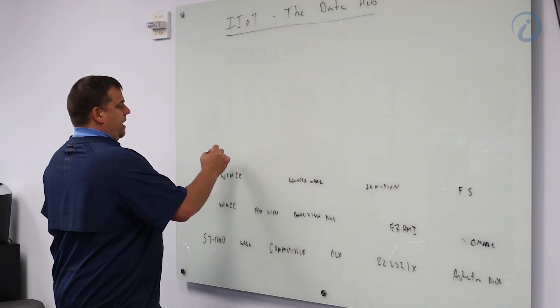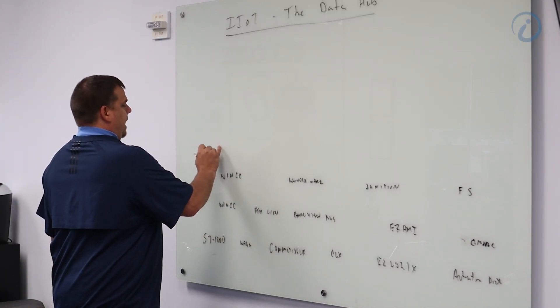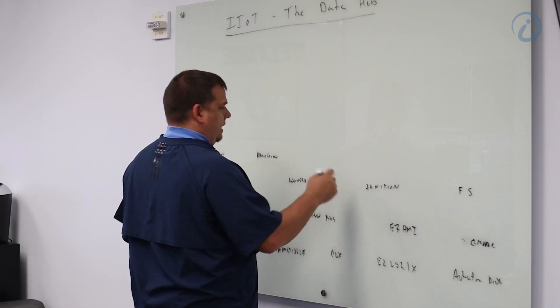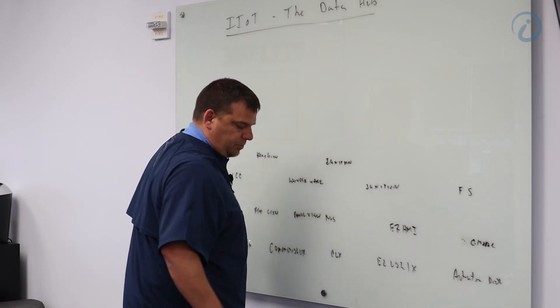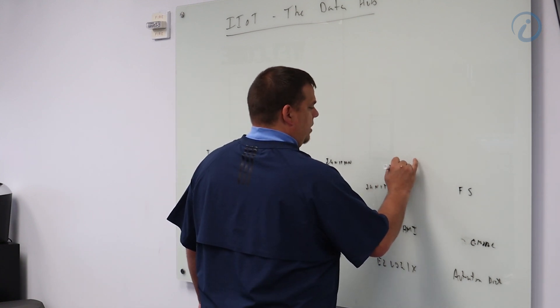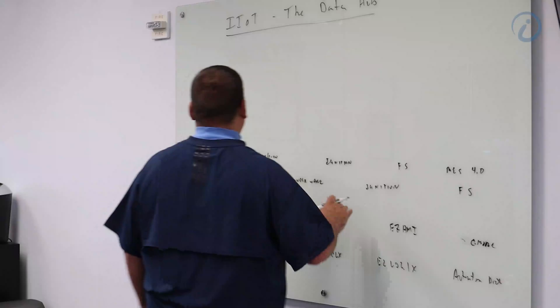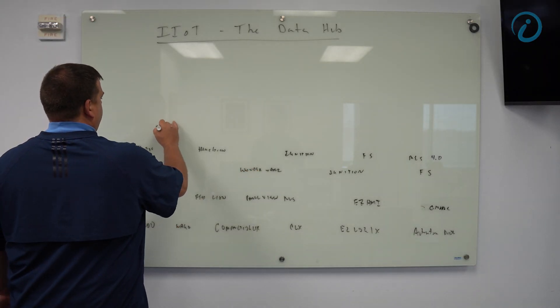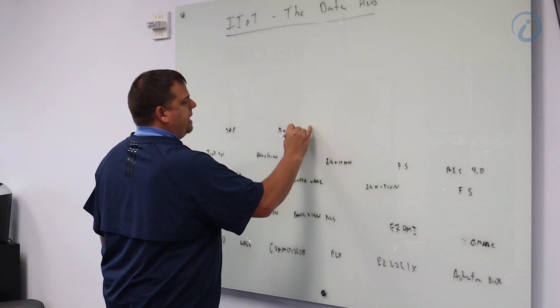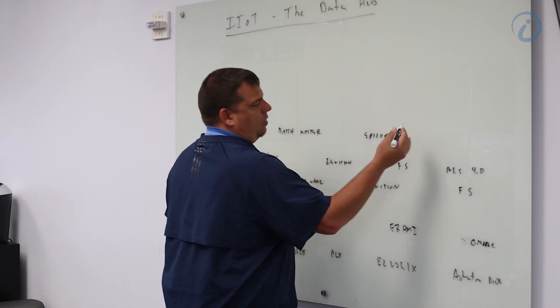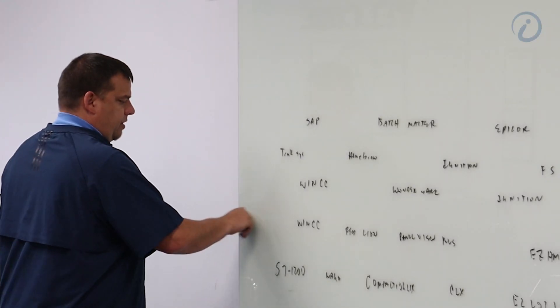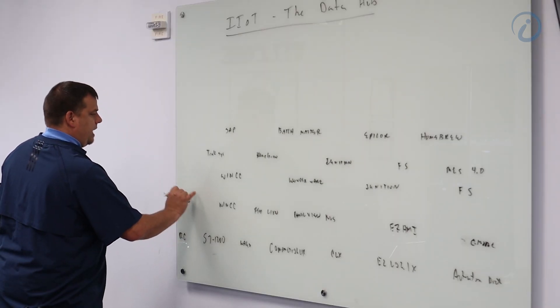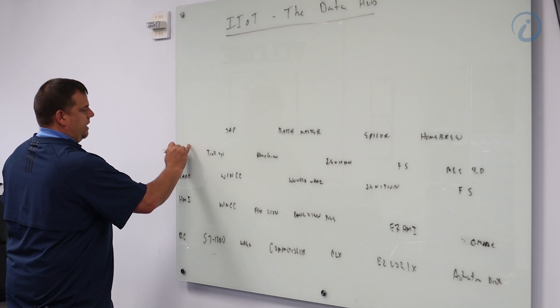When we move up to the MES layer, let's go ahead and say we got Traxys, we've got homebrew which is very common, let's say we have Ignition which is Sepasoft's modules, we have Factory Studio MES 4.0. Then above the MES system we'll have our ERP. We'll have SAP, batch master, Epicor, homebrew.